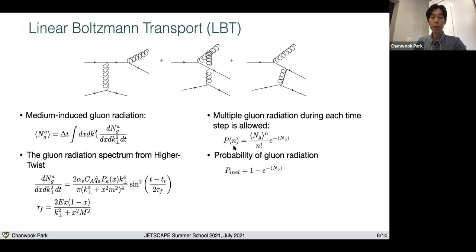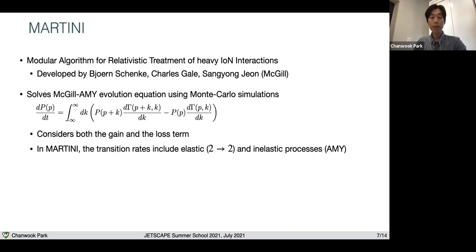Because LBT allows multiple radiation at a given time step, the number of the radiation obeys this Poisson distribution. The final expression for the probability of having gluon radiation can be expressed as this equation where if this N_G is small enough, this expression can be reduced as simply N_G.